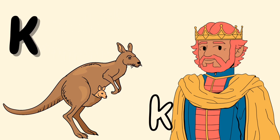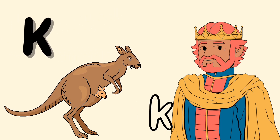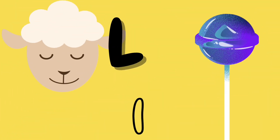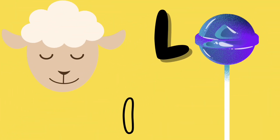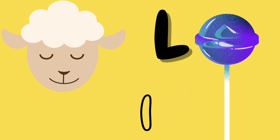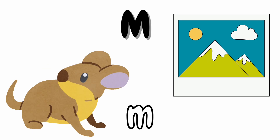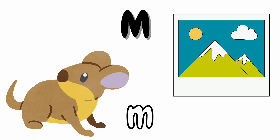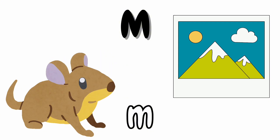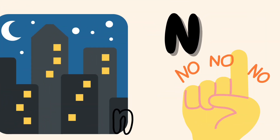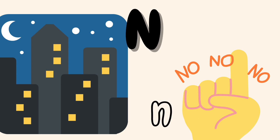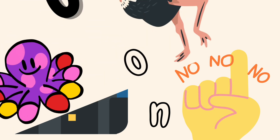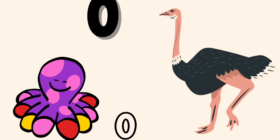K is for King — K-K-King, K-K-King, K-K-King. K is for Kangaroo. L is for Lollipop — Lollipop, Lollipop, Lollipop.